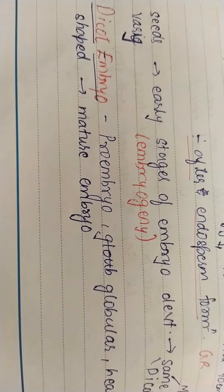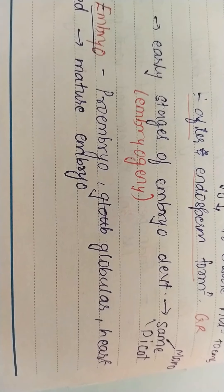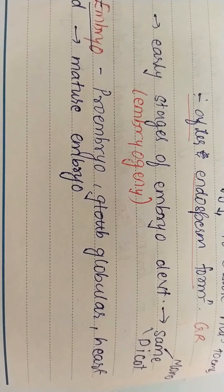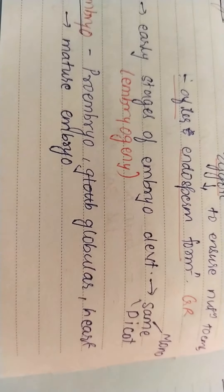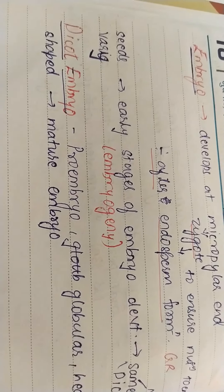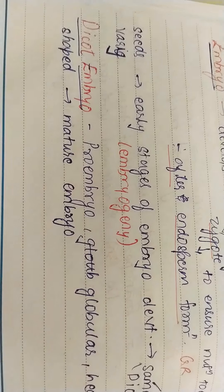The sequence of development goes like this: first a proembryo is formed, then a globular embryo, and then heart-shaped embryo, and then the mature embryo. Now this is just in a nutshell, we are not going into the details of embryo formation.